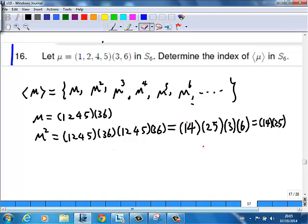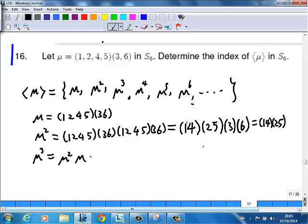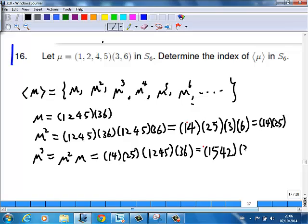So what is the cube? μ³ means μ² dot μ, right? μ dot μ². Okay, so this is (1,4,2,5) multiplied by (1,2,4,5)(3,6). So you multiply them out. I'll just do a quick one. So 1 goes to 2, 2 goes to 5. 1 goes to 5. And 5 goes to 1, 1 goes to 4. Okay, then 4 goes to 5, 5 goes to 2. Okay, then 2 goes to 4, 4 goes to 1. 3, 6 I will say that 3, 6. Okay.